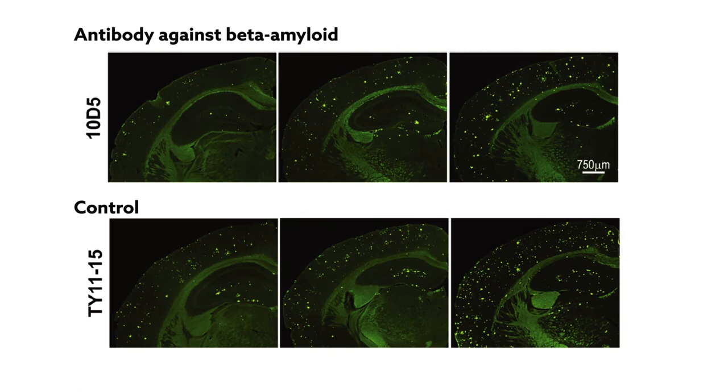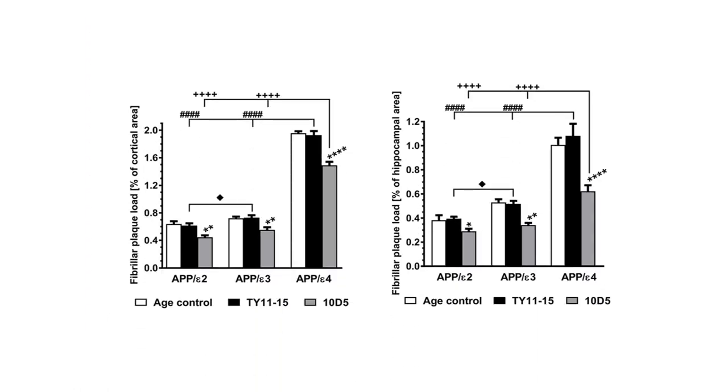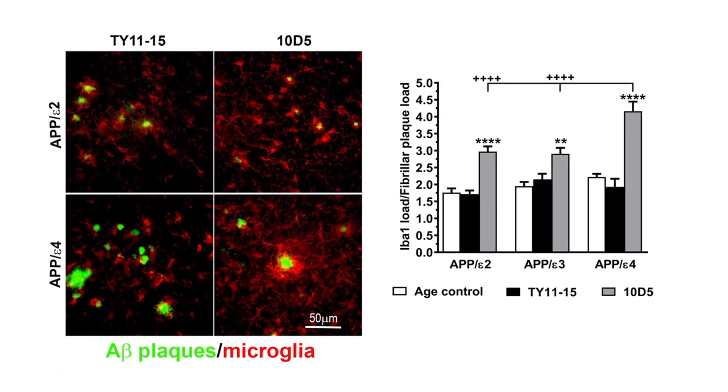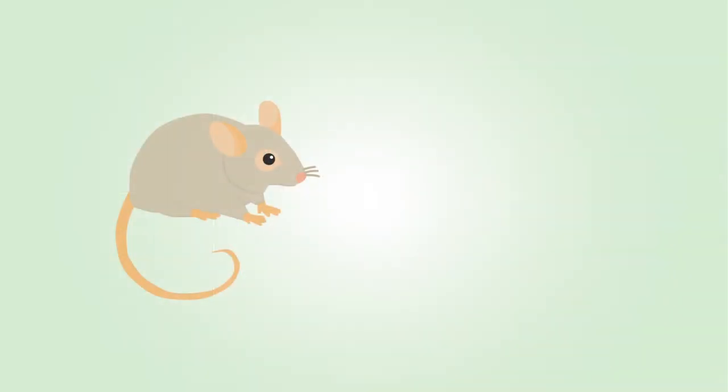All of the mice responded well to the beta-amyloid antibody, but the mice with the high-risk allele showed the greatest reduction of beta-amyloid thanks to higher activation of immune cells in the brain, known as microglia. In other words, the mice with the most severe disease were also the most responsive to treatment.